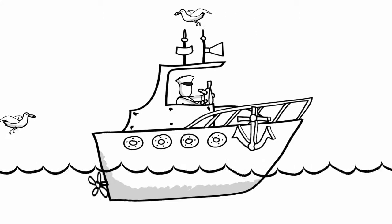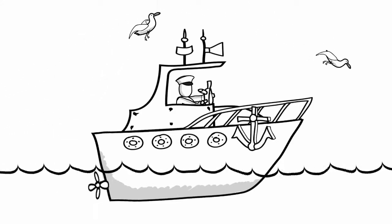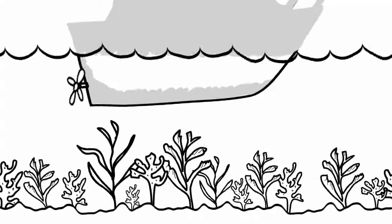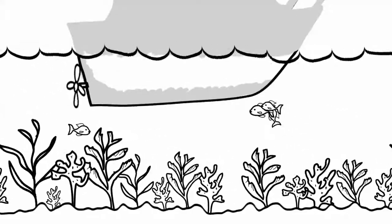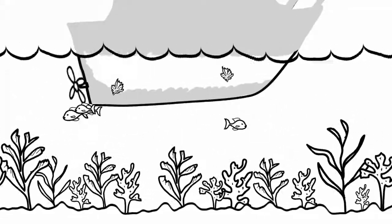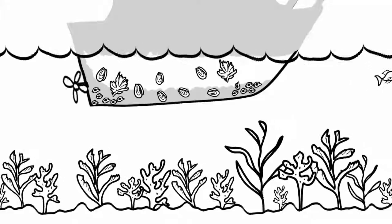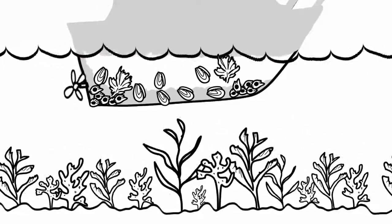So you have a nice boat and you like to sail out to sea. Awesome! But when you're sailing, all this marine growth sticks to your boat—you know, like algae, mussels, barnacles. So to prevent that, you get a fancy coating.